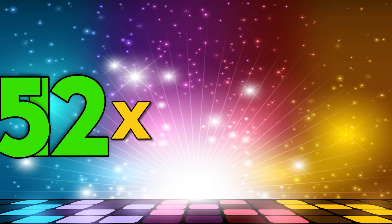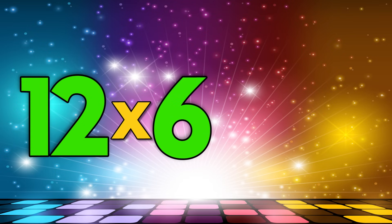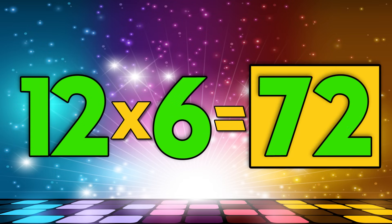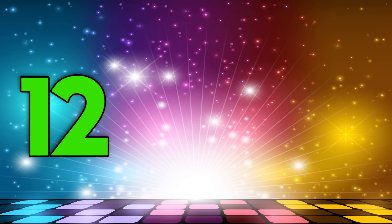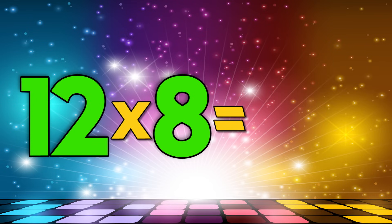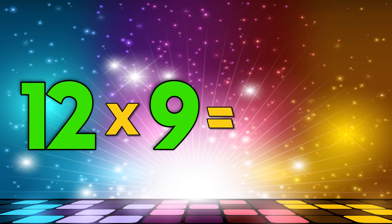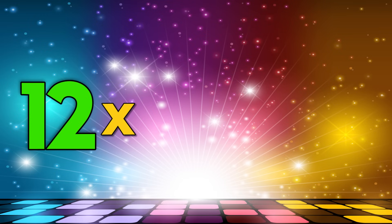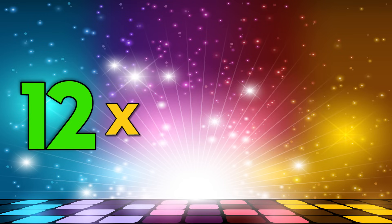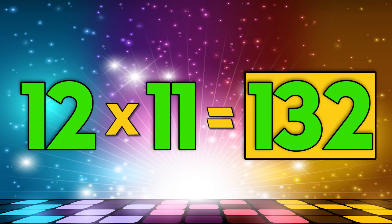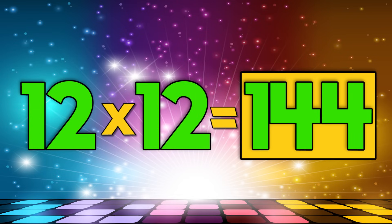Twelve times five is sixty, twelve times six is seventy-two, twelve times seven is eighty-four, twelve times eight is ninety-six, twelve times nine is one-hundred-eight, twelve times ten is one-hundred-twenty, twelve times eleven is one-hundred-thirty-two, twelve times twelve is one-hundred-forty-four.